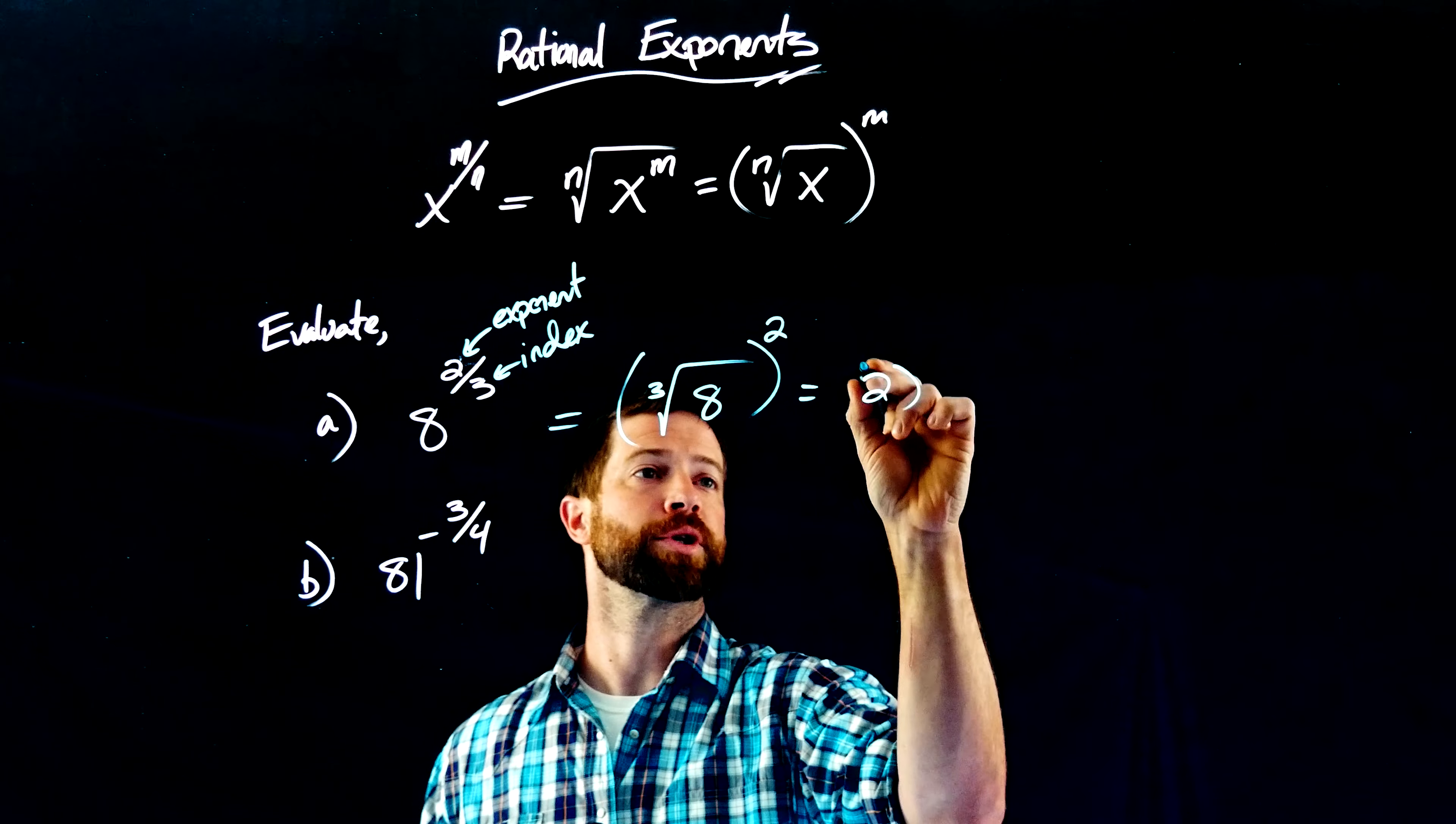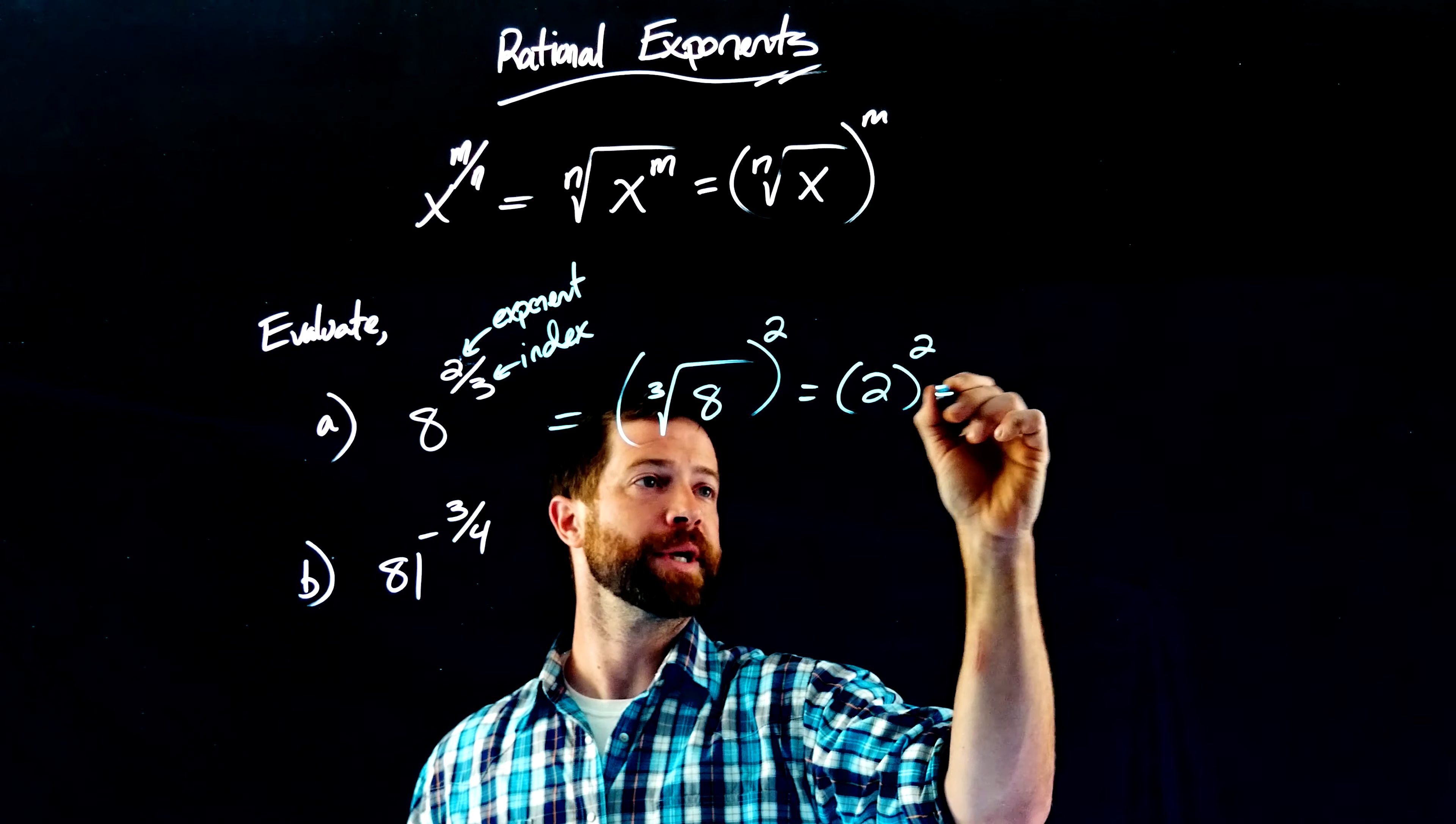Again, it will not actually matter what order I do these two operations, but I'm first going to take the cube root to get 2. The cube root of 8 is 2. 2 squared, we know, is 4.